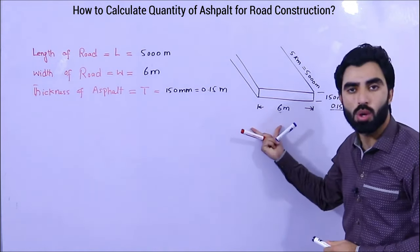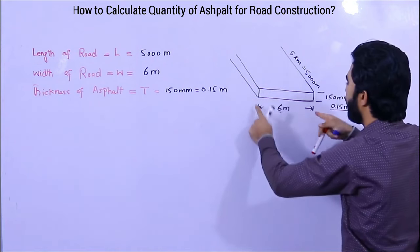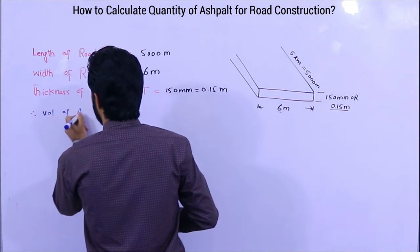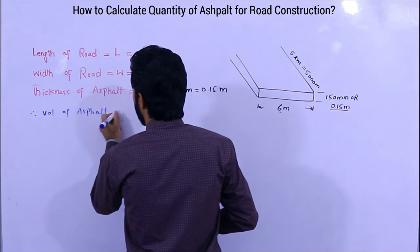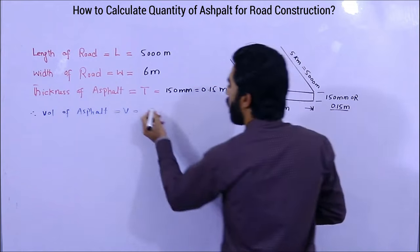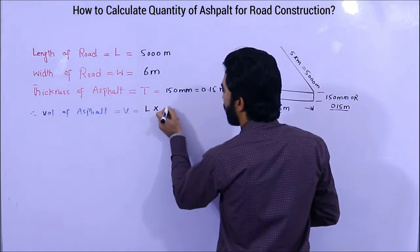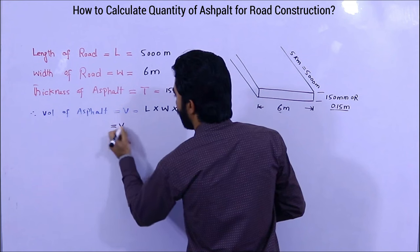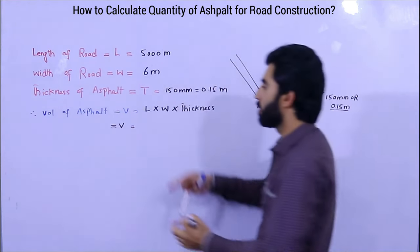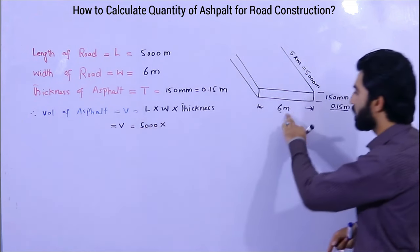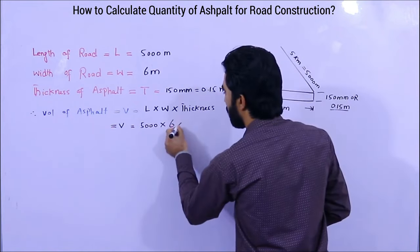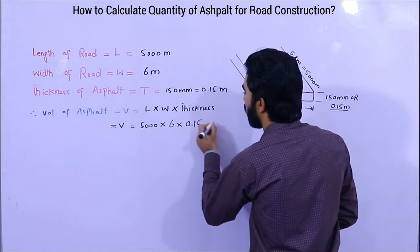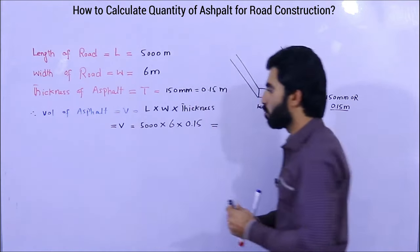The volume is length × width × thickness. Volume of asphalt V = L × W × T. So volume equals L = 5000 meters × width = 6 meters × thickness = 0.15 meter. Let me calculate its volume.